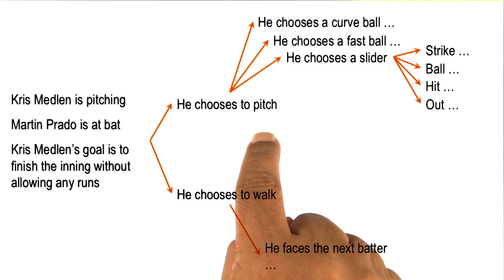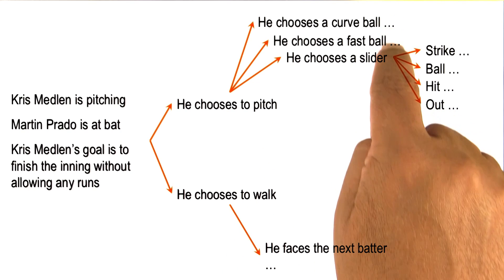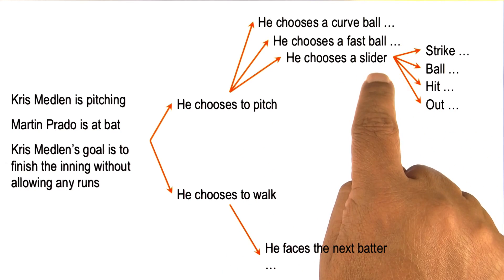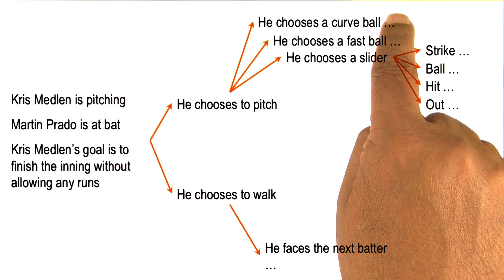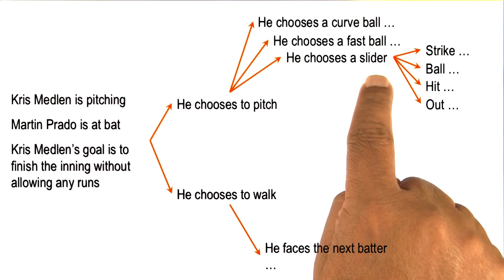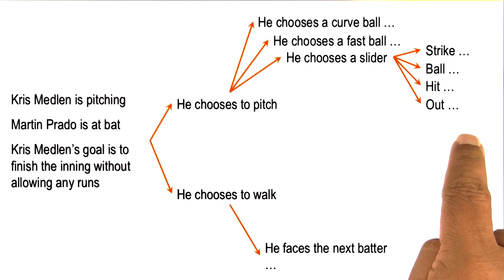If he chooses to pitch, then he'll have to decide what kind of ball to throw, a slider, a fastball, or a curveball. If he throws a slider, then there is a next set of possibilities open up.